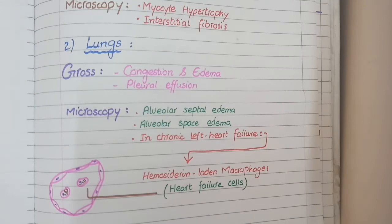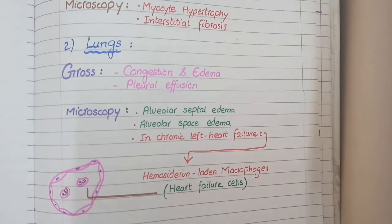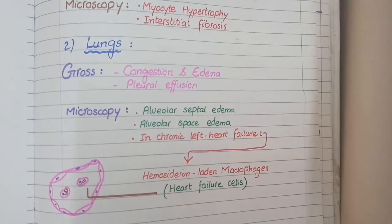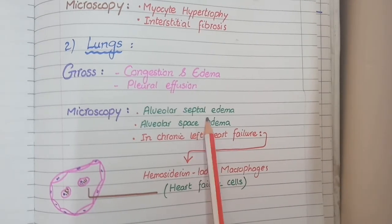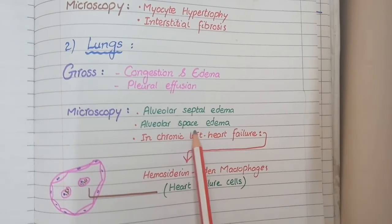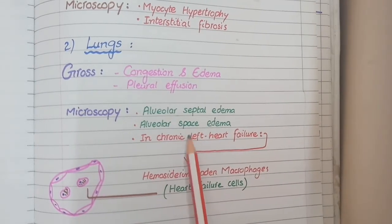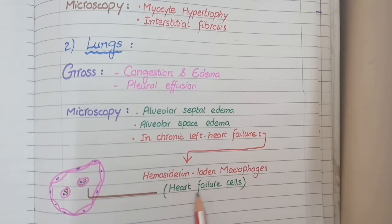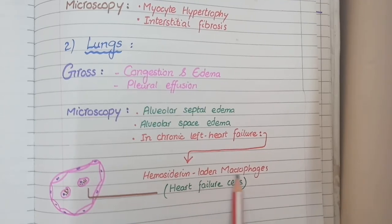Keep in mind that heart failure cells are formed in left-sided heart failure, but they are not present in the heart — rather, they are present in the lungs. So on the microscopic picture of the lungs in left-sided heart failure, you see alveolar septa edema, alveolar space edema, and heart failure cells, which are hemosiderin-laden macrophages.